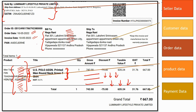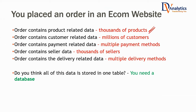What I'm trying to tell you is there is a lot of data which is interconnected and needs to be saved in a structured manner. There are thousands of products, millions of customers whose details need to be stored securely. There are multiple payment methods, thousands of sellers, and multiple delivery methods — same-day, next-day, two-day, one-week delivery — all tracking information needs to be stored somewhere.